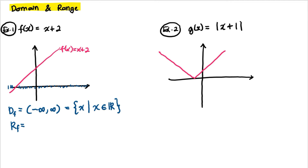For the range of f, the images are on the y-axis. Given the object maps through this function, the image will lie on the y-axis. The range of this graph also goes from negative infinity to infinity.